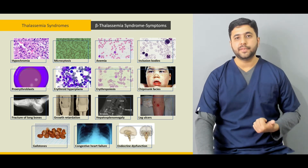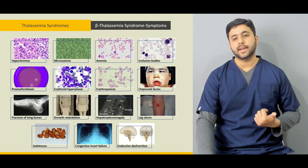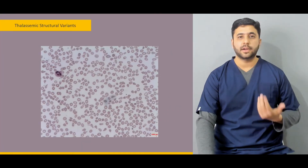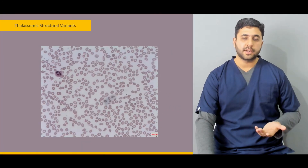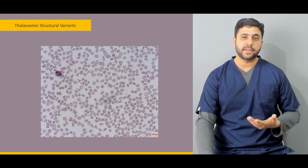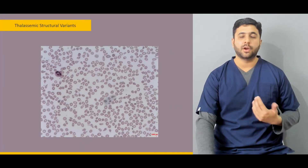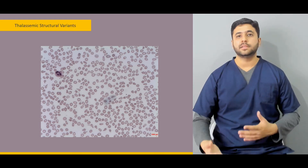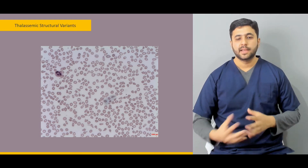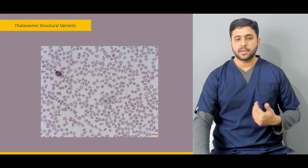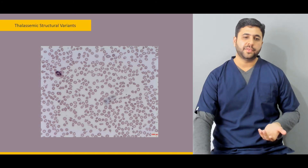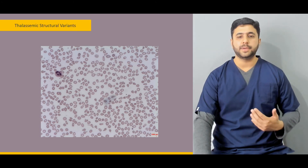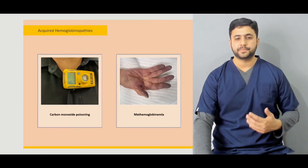After we have a good history and clinical exam, what are the various things we are going to see on the peripheral blood film, and how do we diagnose these patients to effectively manage their symptoms? We will also touch on a few variants of the thalassemia, like the HPE Lepori.